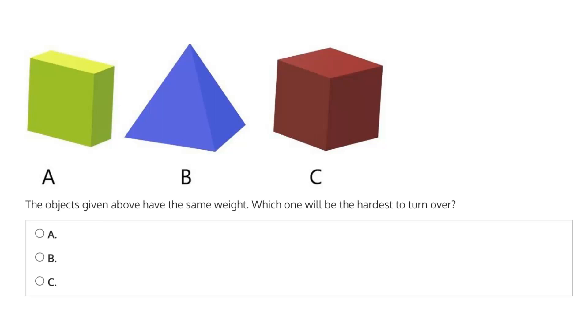So this question says the objects given above have the same weight. Which one will be the hardest to turn over?